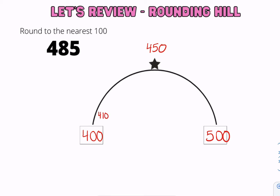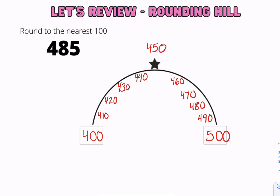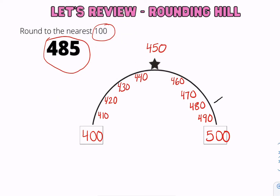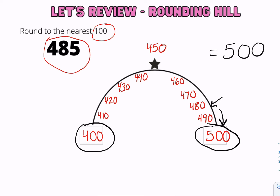We're going to start filling up our numbers and count by 10s: 410, 420, 430, 440, 460, 470, 480, and 490. Now find where 485 would lie — it's between 480 and 490. And same as before, anything after the star always rounds up. So 485 rounds to 500.